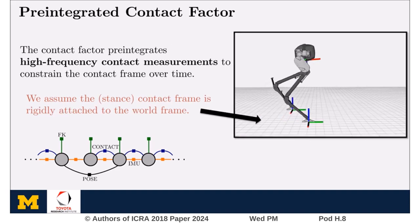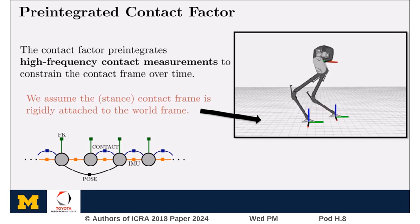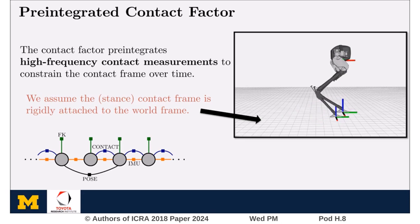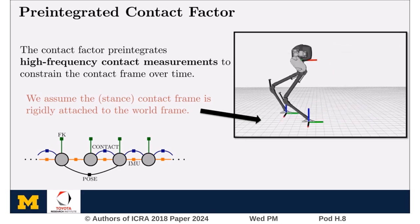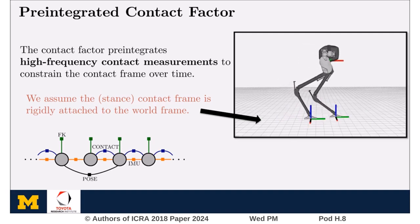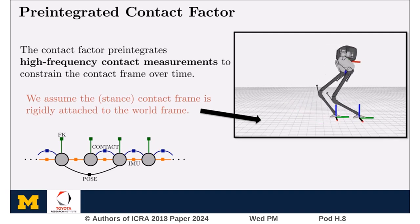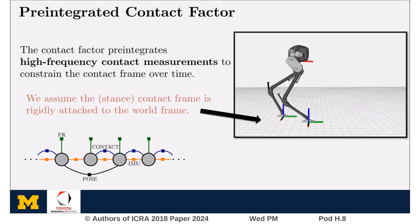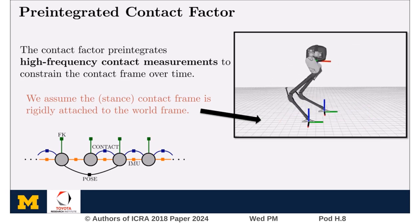We also developed a contact factor that pre-integrates high-frequency contact measurements to constrain the contact frame over time. To do this, we make the assumption that the contact frame is rigidly attached to the world frame. This is implemented as a binary factor that relates the robot state over two consecutive time steps. So the forward kinematic factor relates the IMU frame to the contact frame, and the contact factor describes the motion of this contact frame. Together, these factors will constrain the motion of the IMU frame, which will improve the overall state estimate.